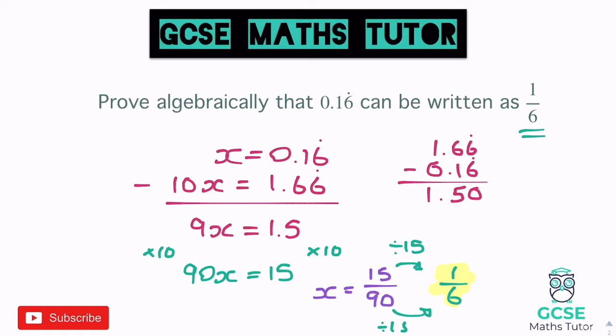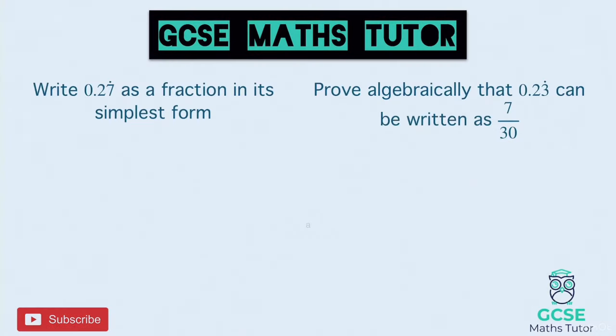That last step is really important — make sure you show how you've simplified your fraction. So here are some for you to have a go at: two questions, both with one recurring decimal, so both need multiplying by 10. Pause the video, have a go, and we'll go over the answers in a moment.